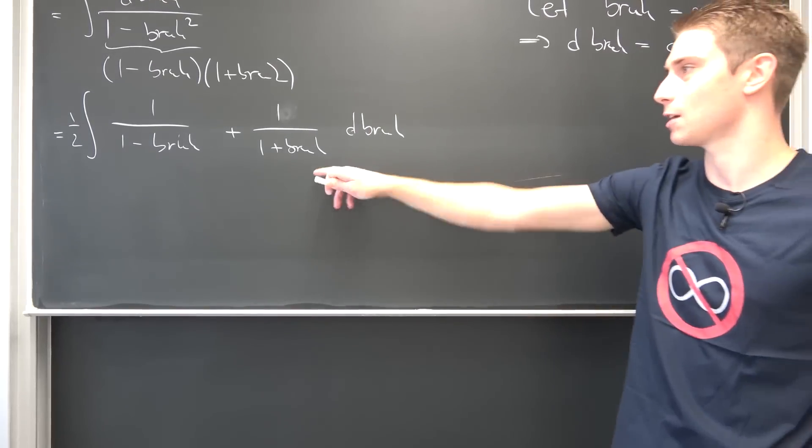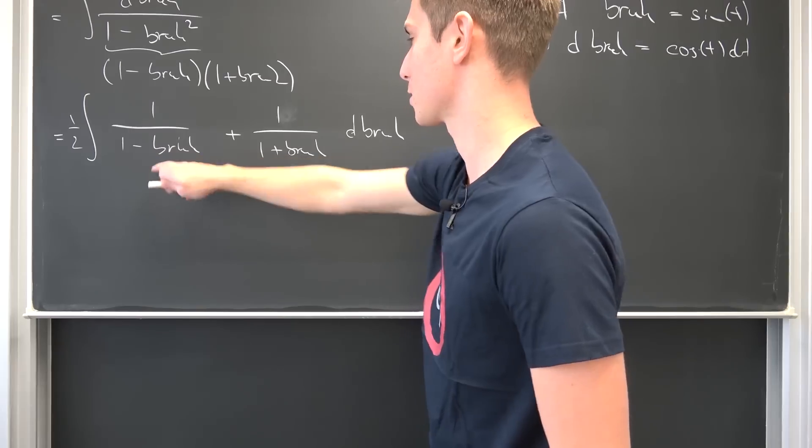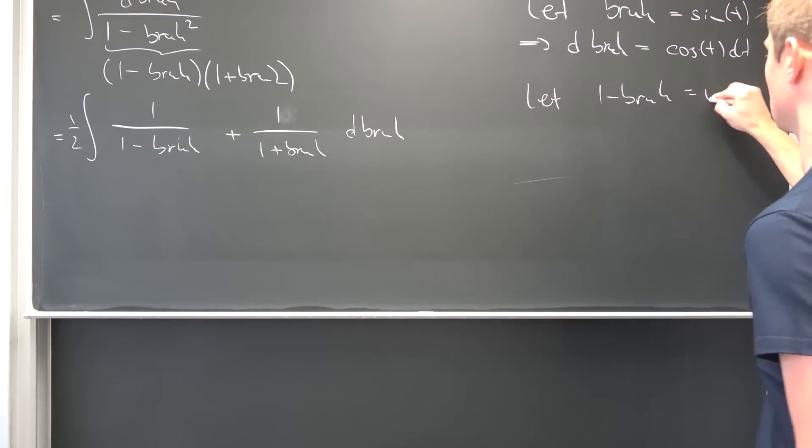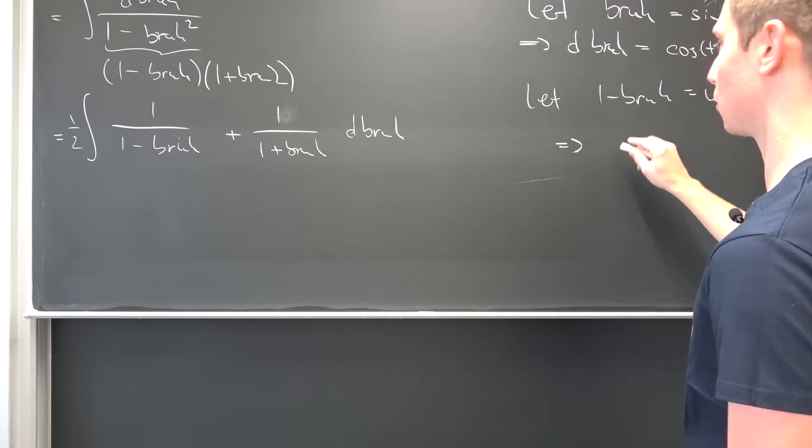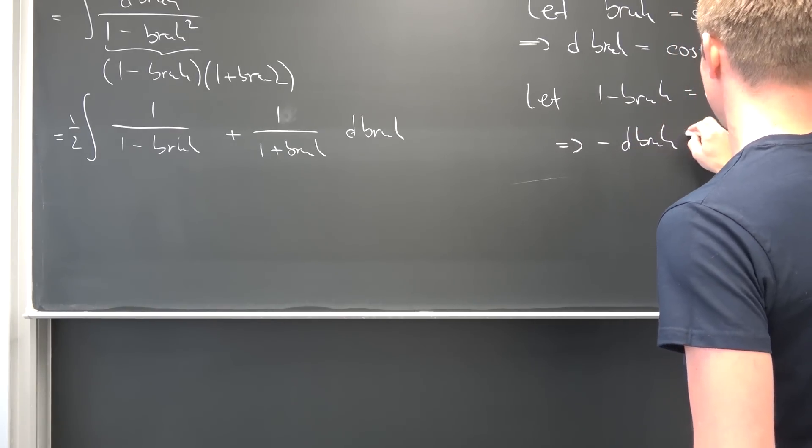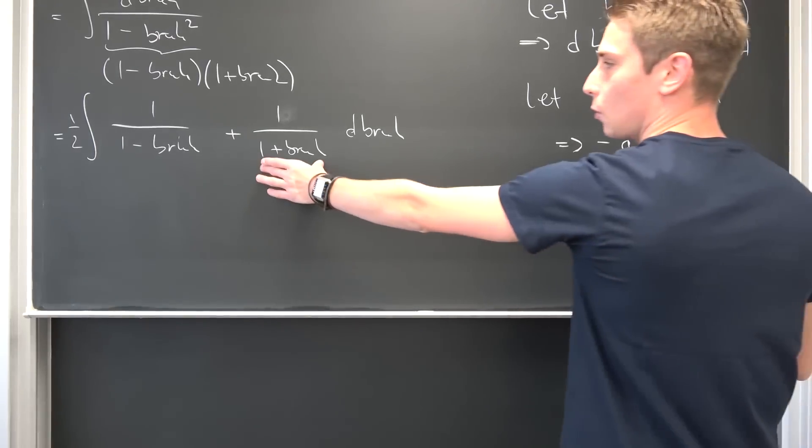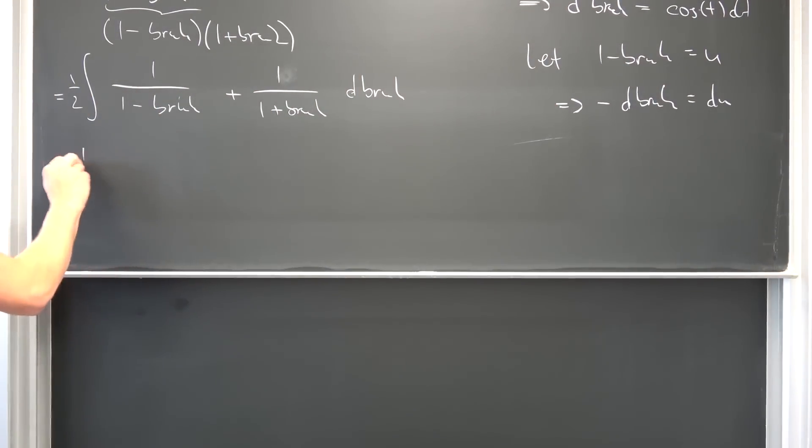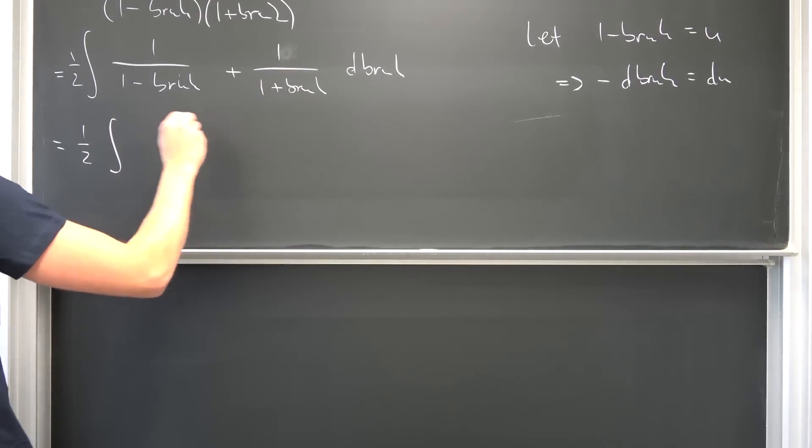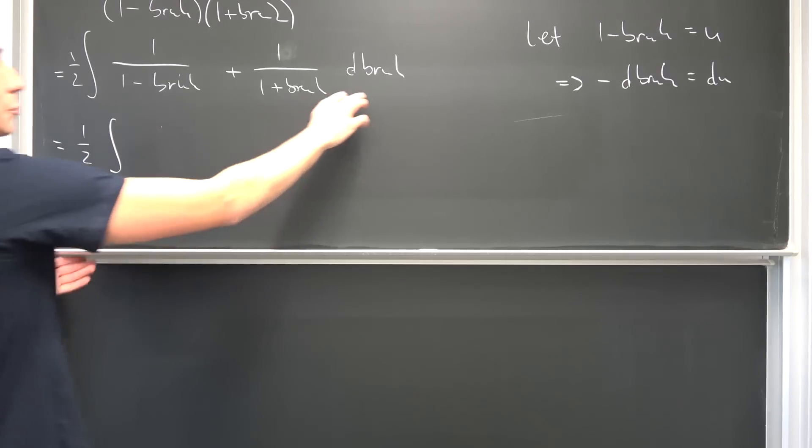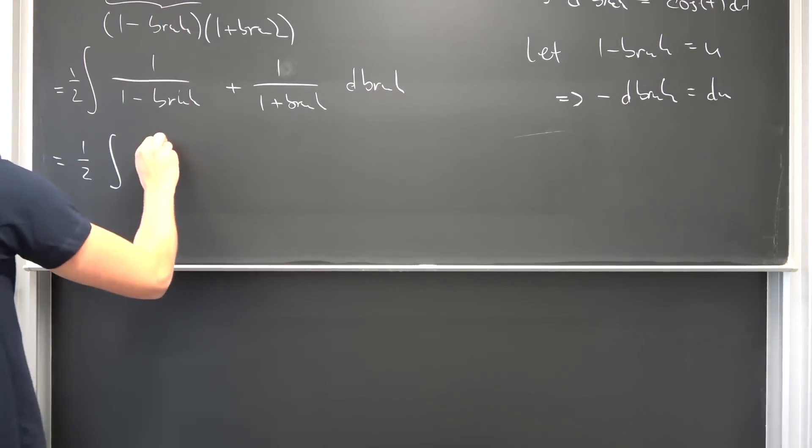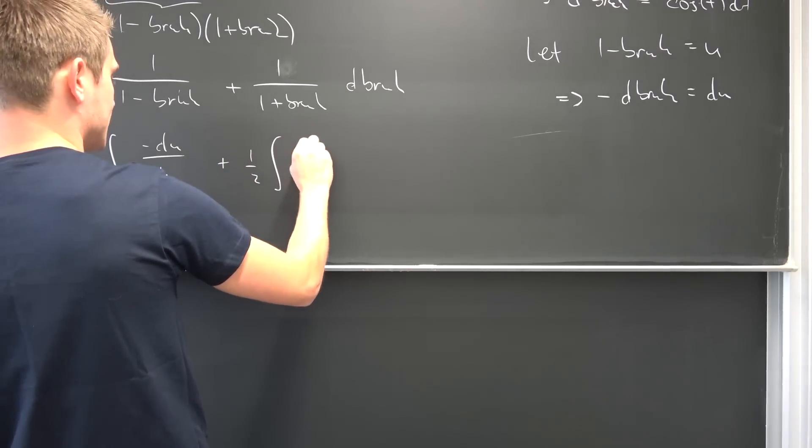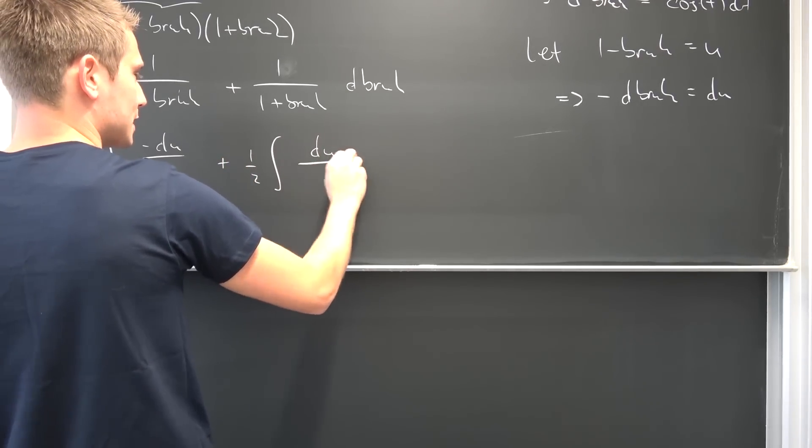Now we can continue from this point onward. We can basically just substitute stuff now. So let 1 minus bruh be equal to u for example. Meaning we are going to get negative d bruh being equal to du. And the same thing holds for this thing right here, just with a positive sign instead of a negative sign. Meaning we are going to end up with one half times the integral of negative du over u and then plus one half times the integral of du over u.